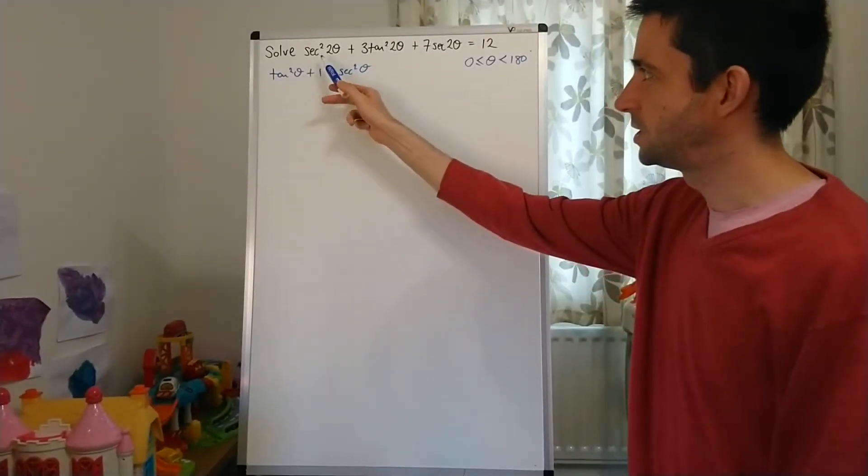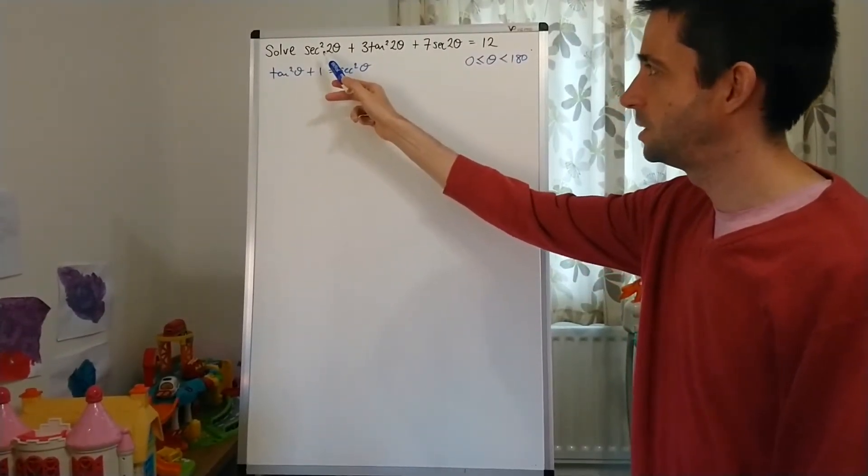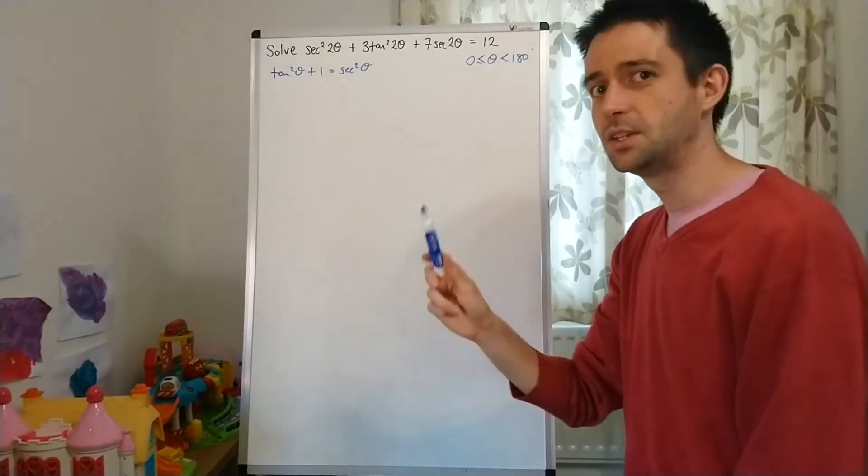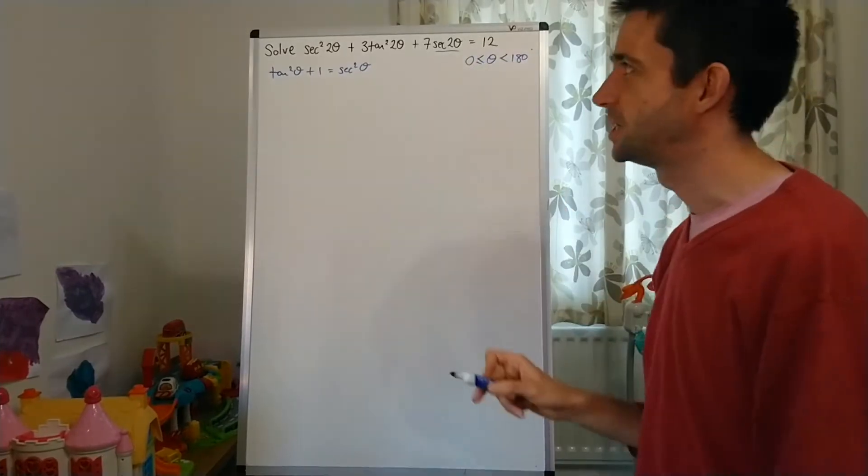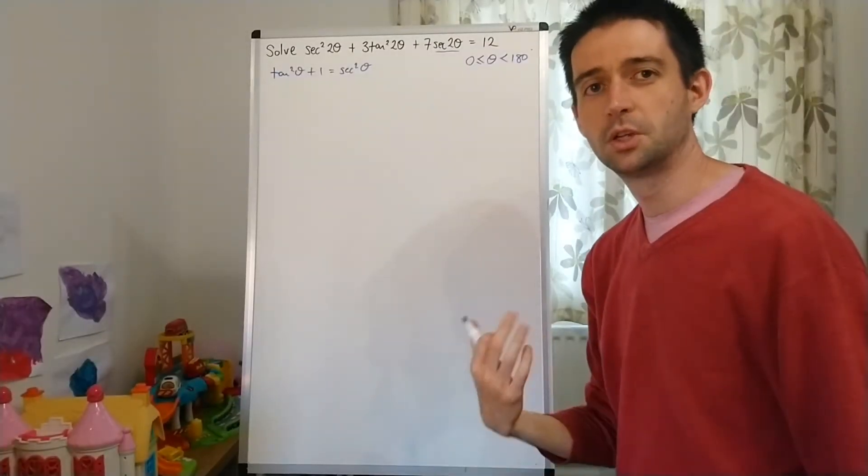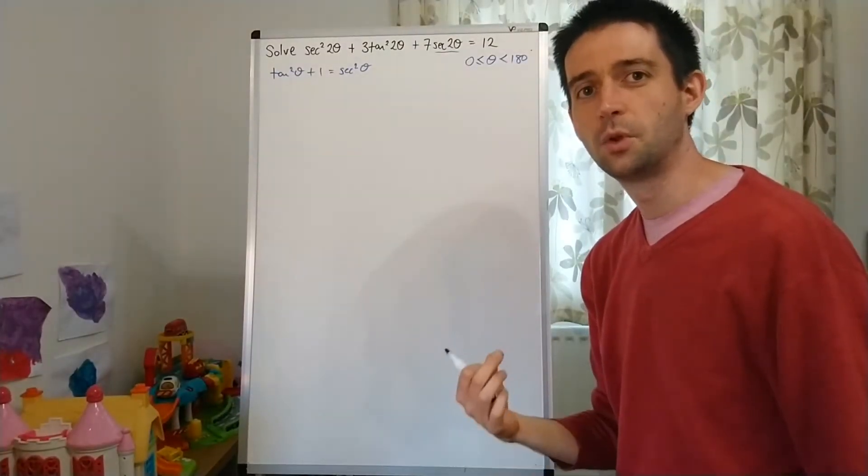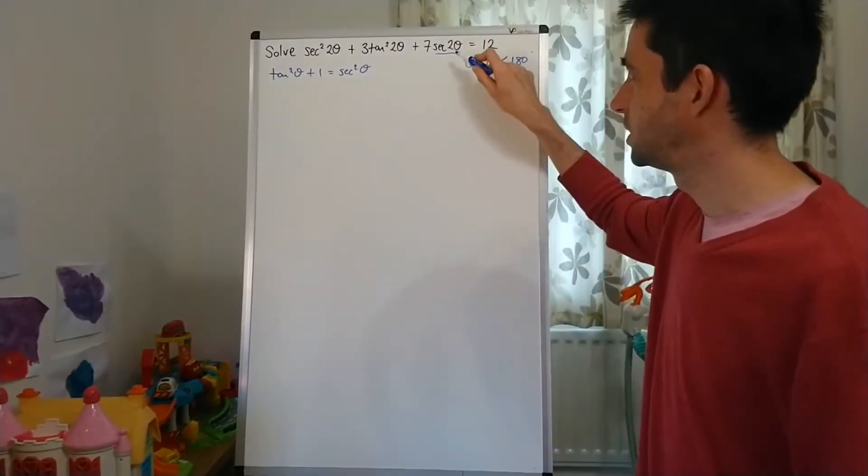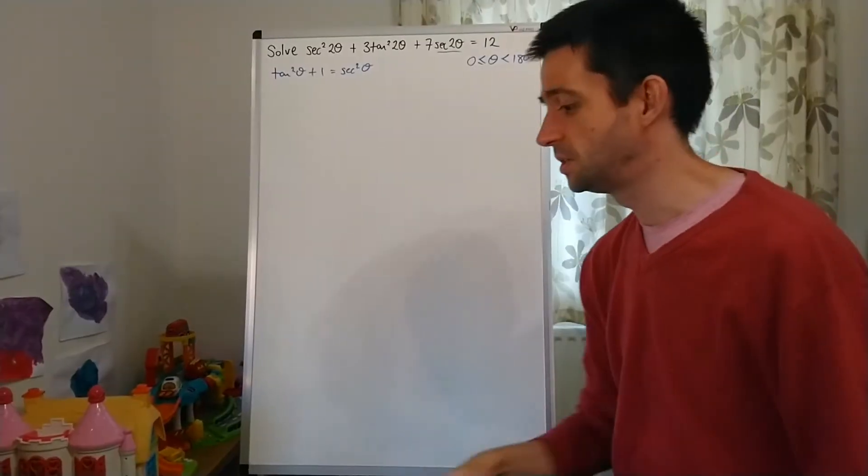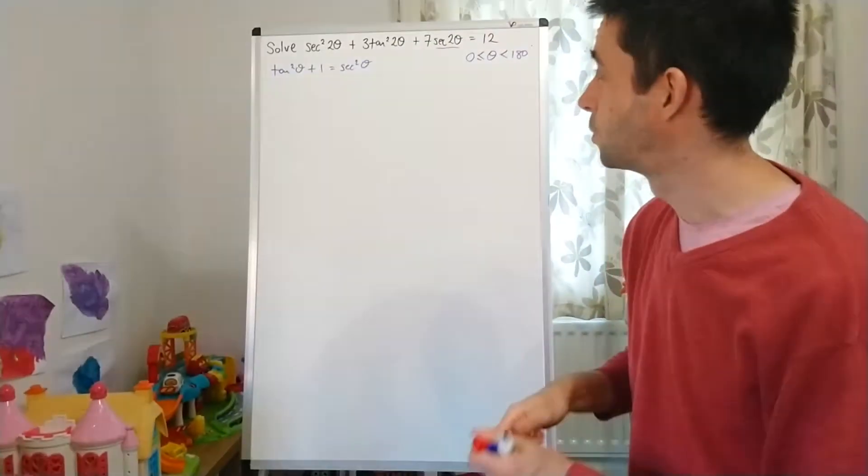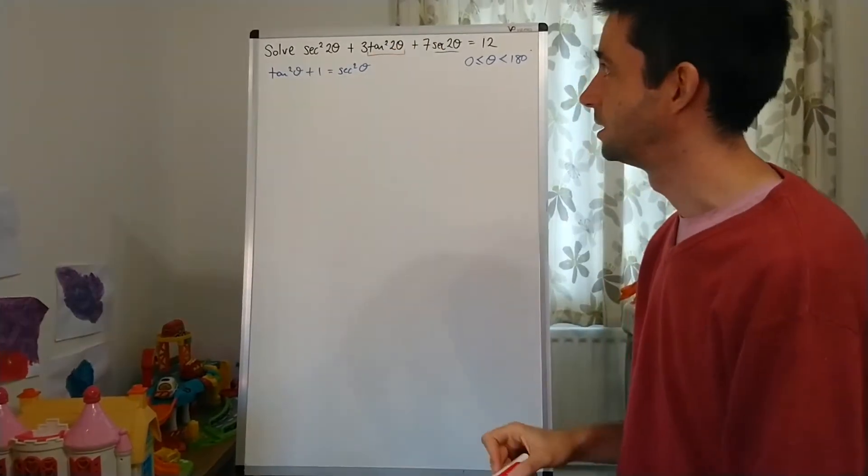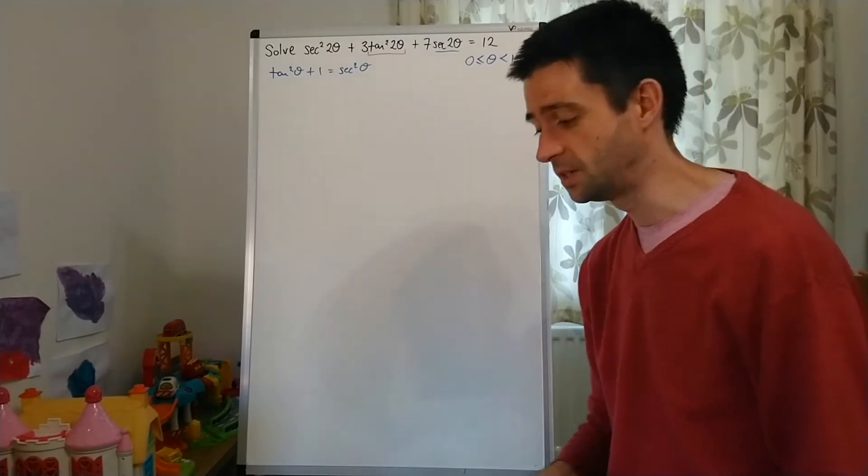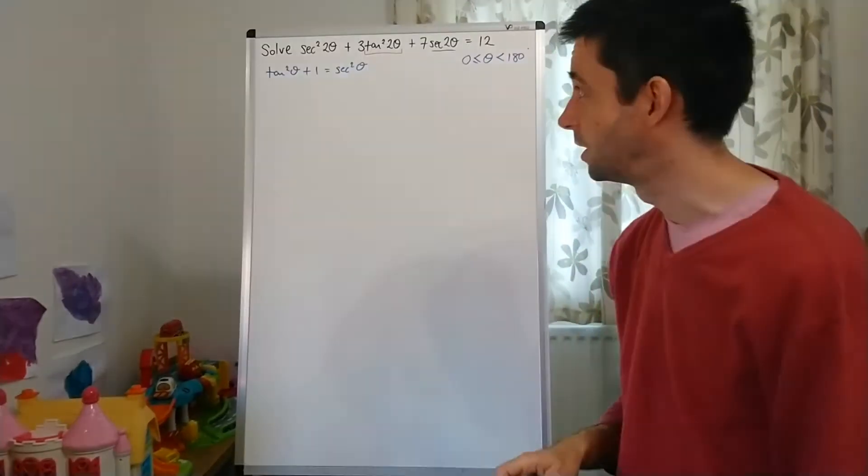But am I going to be replacing the sec²2θ or am I going to be replacing the tan²2θ? Well, the key to knowing that is to actually look at this one here, the sec2θ. Because what I want to do with these is I want everything to be in terms of the one that isn't squared. So because the sec2θ is not squared, it means that what I want to be doing is swapping the tan²2θ to be in terms of sec.